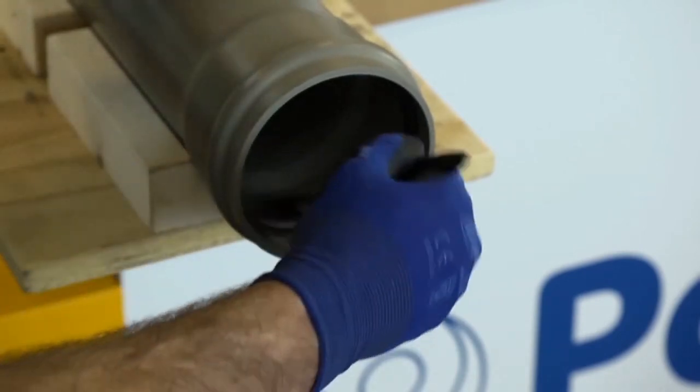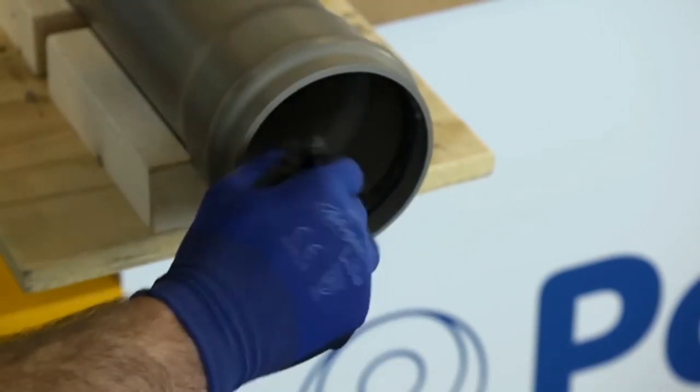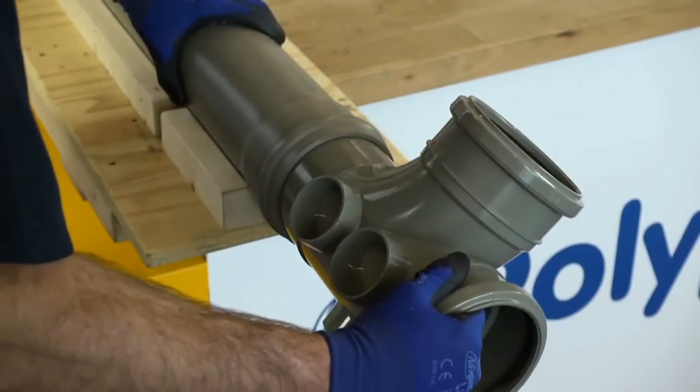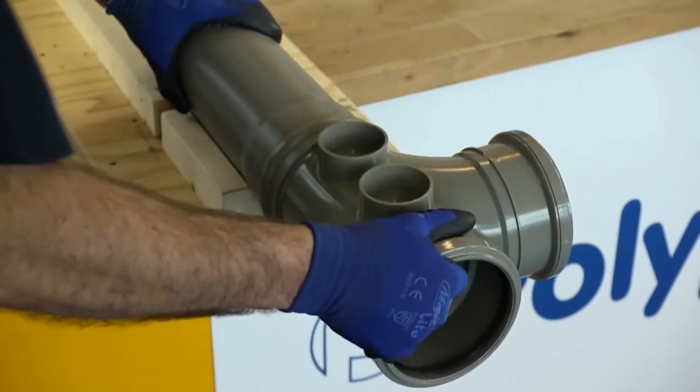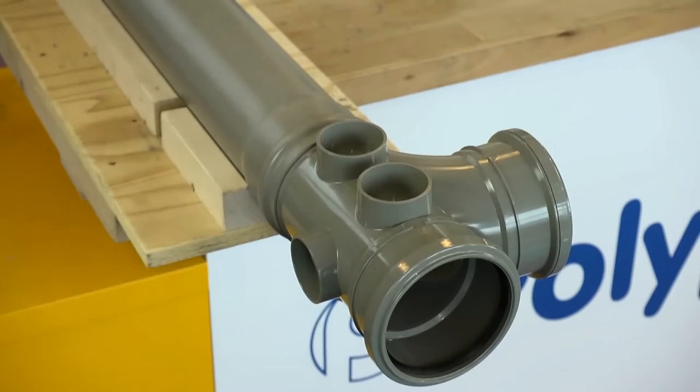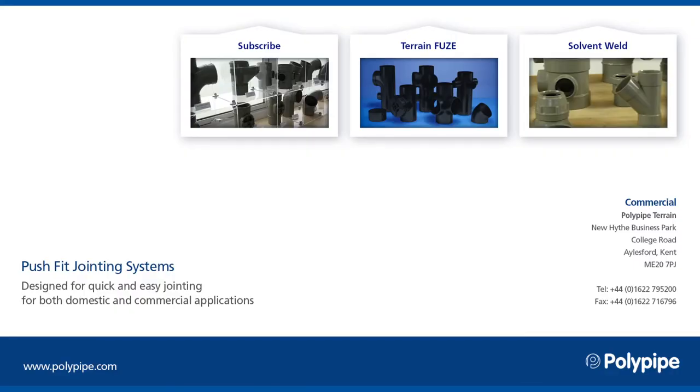Next, apply a thin film of lubricant to the rubber seal of the socket joint. Push the branch into the socket joint until it stops.